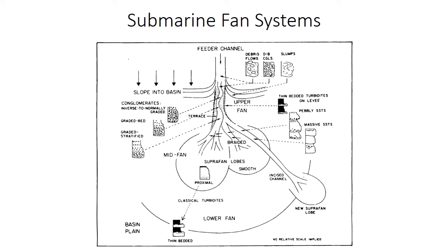We've previously considered how the flow behavior of submarine sediment gravity flows, especially turbidites, influences the resulting deposits on these small-scale point source fans. Keep in mind that this model, like the one you looked at before, is just an idealized situation. There can be some variability in where specific facies actually occur, depending on the type of sediment supplied or on the morphology of the fan.